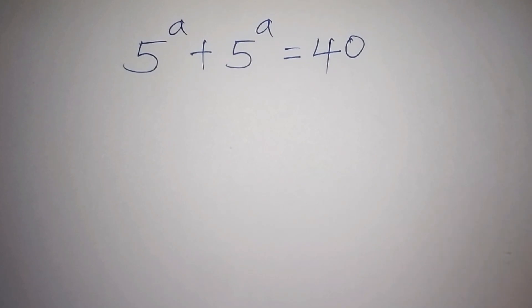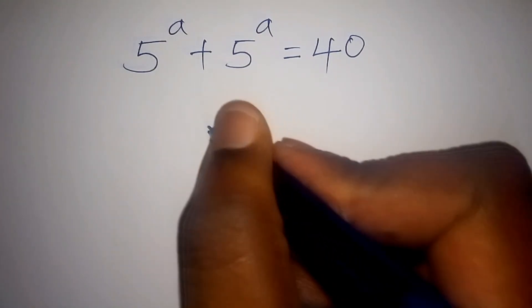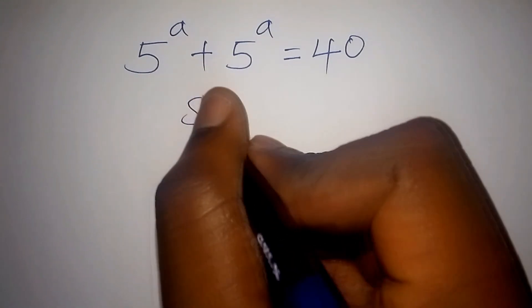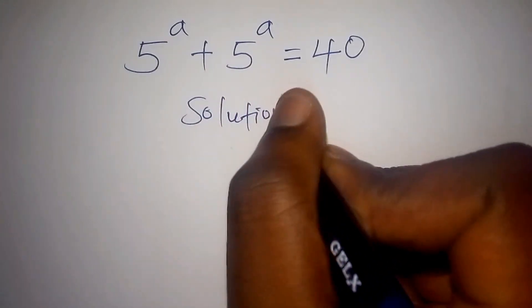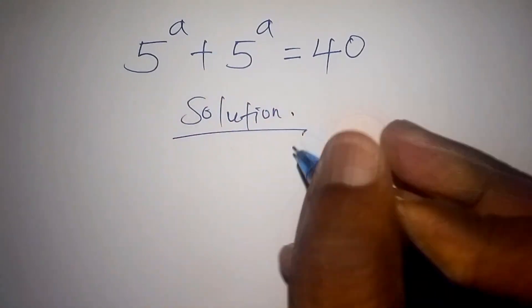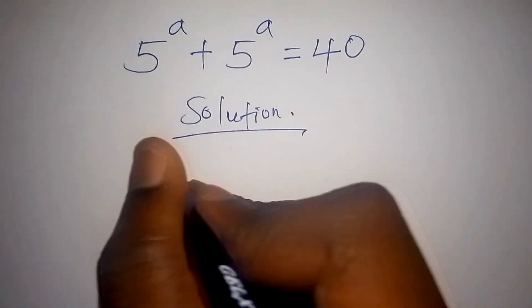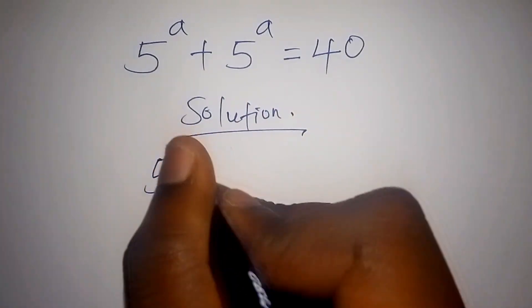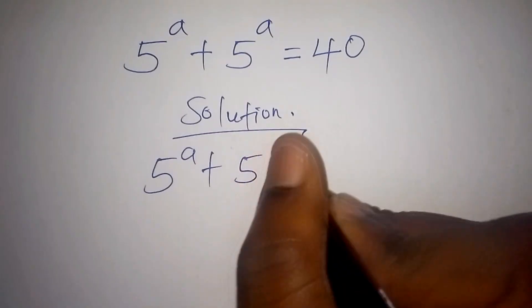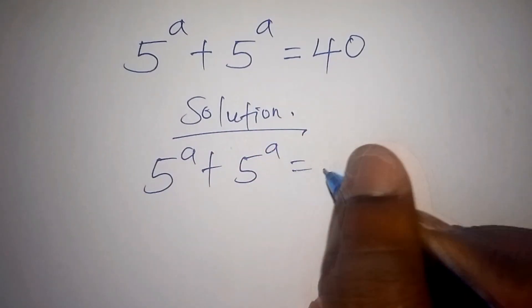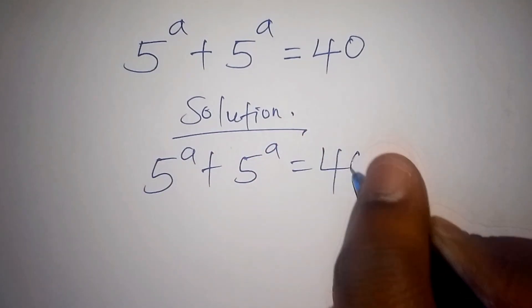Hello, let us solve this amazing maths olympiad question. So let us now start with the solution. This is the maths problem: we have 5 to the power of A plus 5 to the power of A is equals to 40.